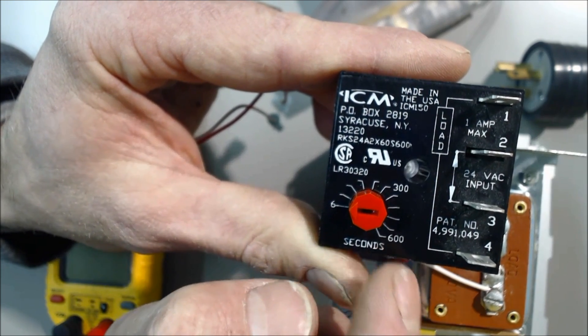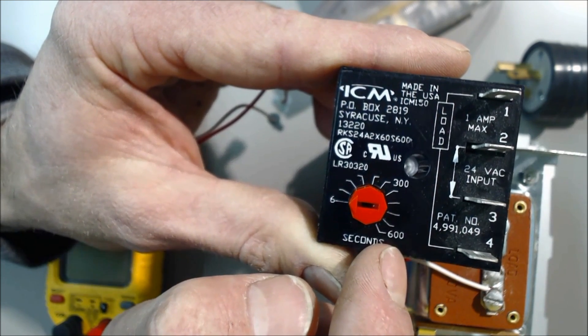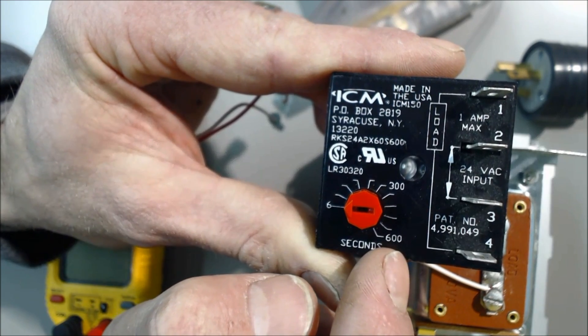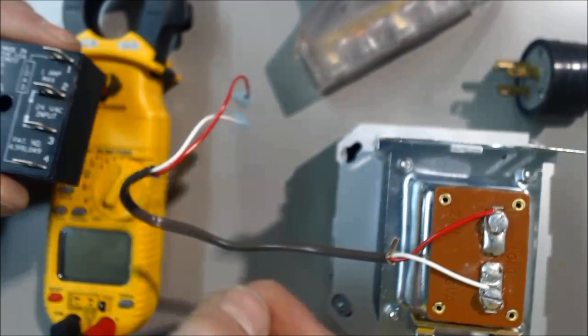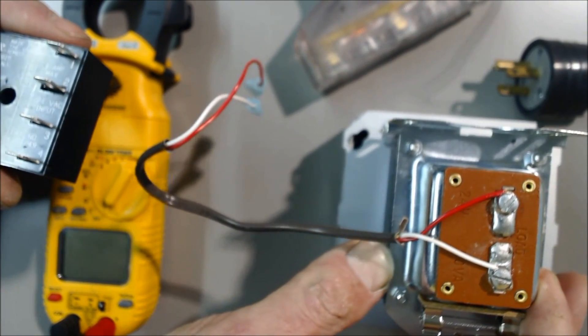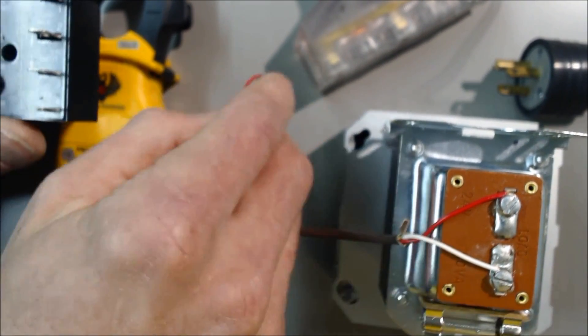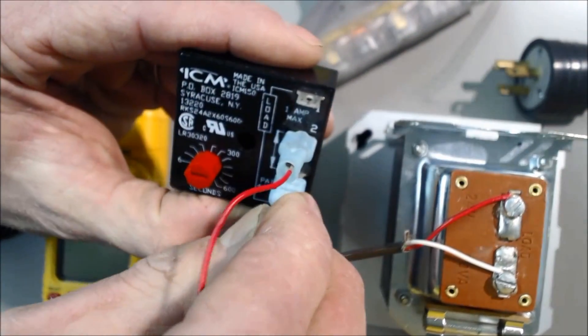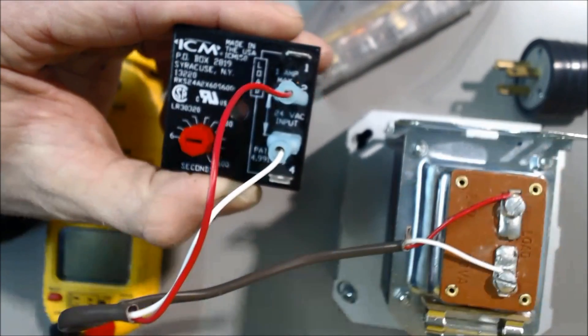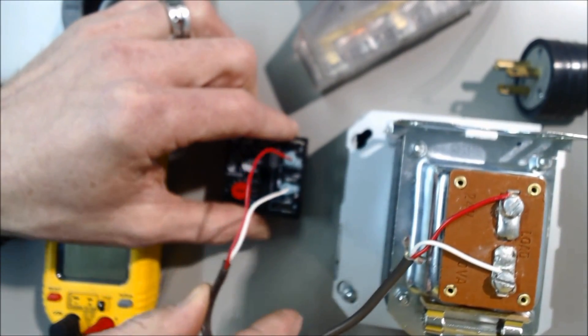So it's a very simple component, very cheap component, but very crucial to the life of your compressor inside your outdoor condenser. So what we have here is a 120-volt to 24-volt transformer which we're going to plug in. We're going to attach our hot here and our common. We're going to keep this at six seconds and we're going to go ahead and